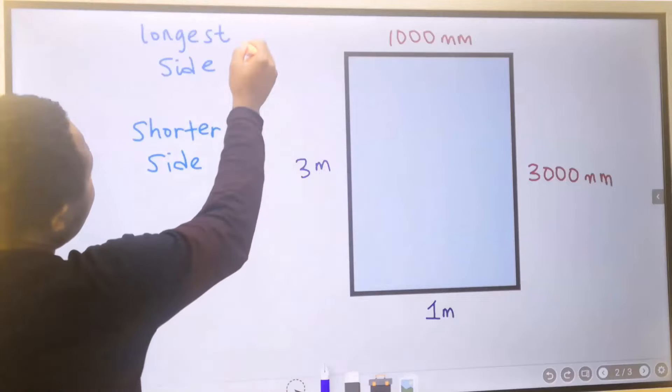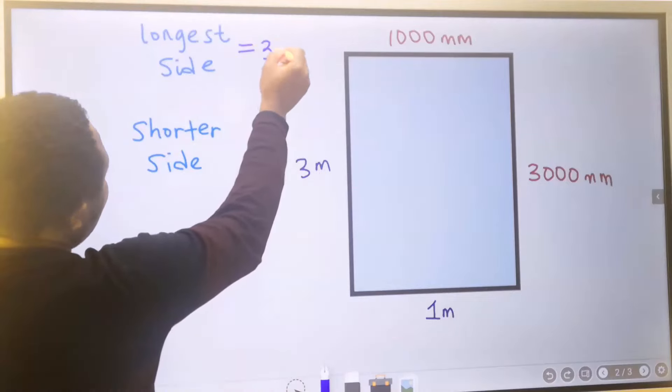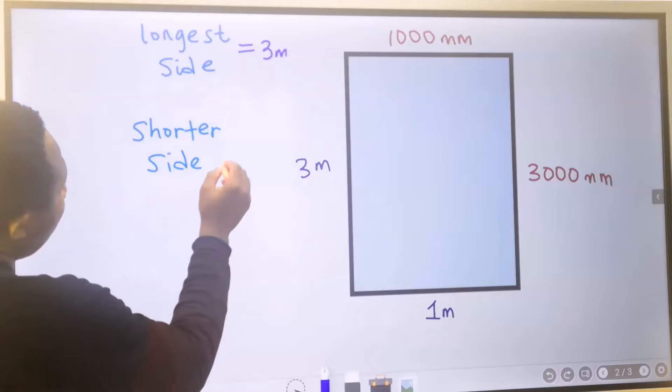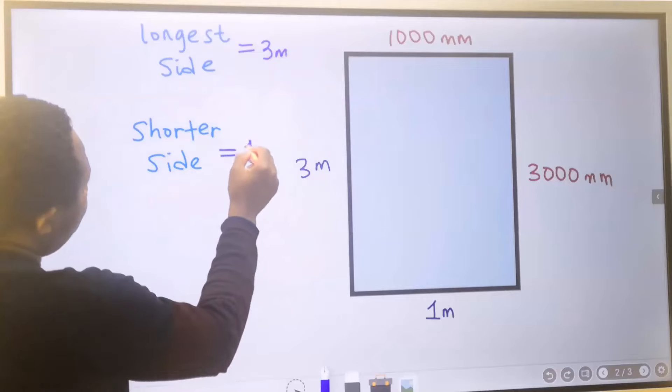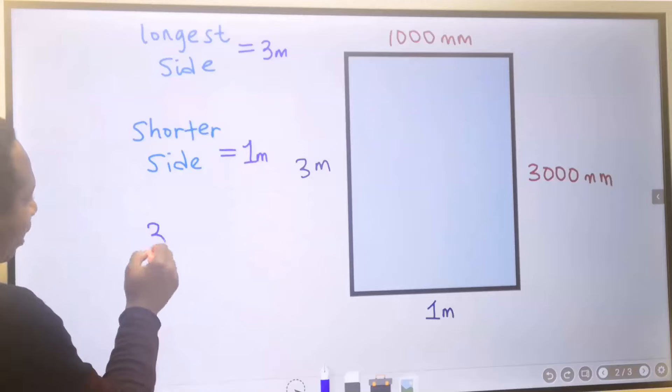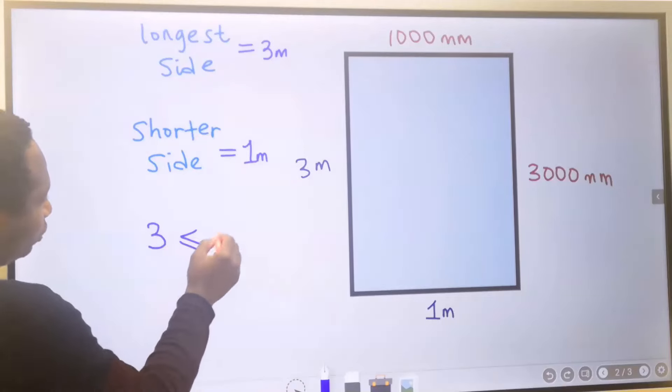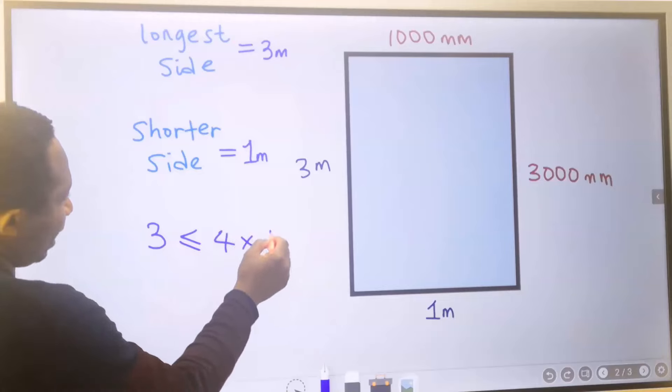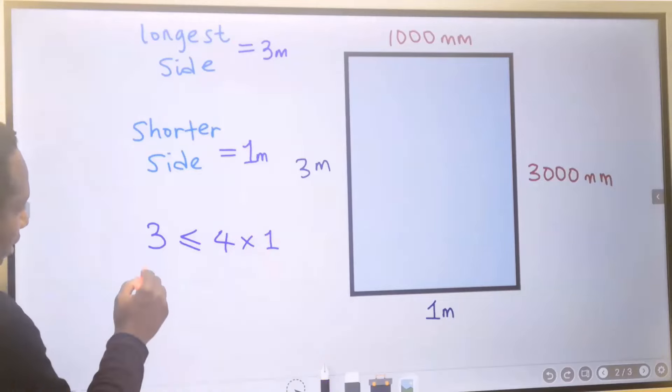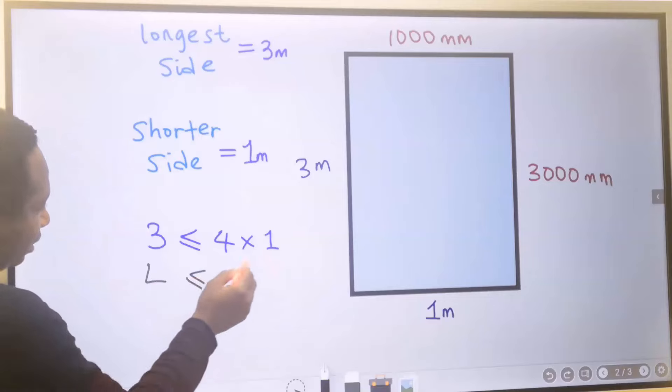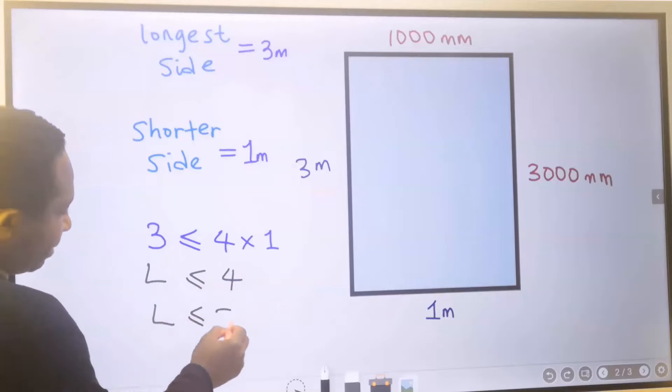The longest side is three meters, and here, the shorter side is one meter. The longest side must be less than or equal to four multiplied by the shorter side. The longest side is three, and the shorter side is four. That means the condition is met.